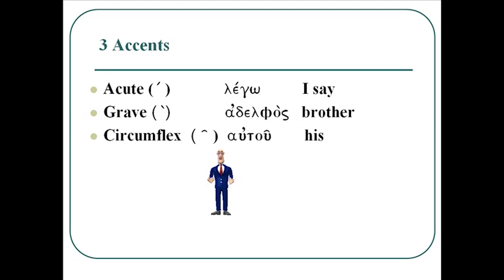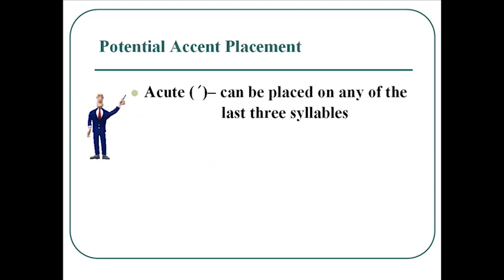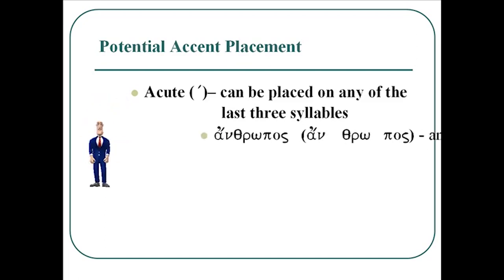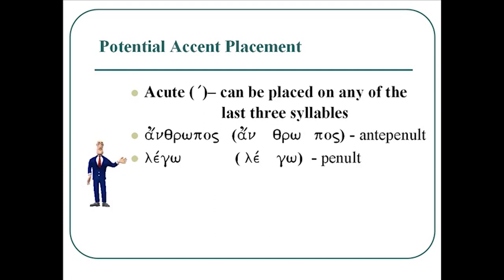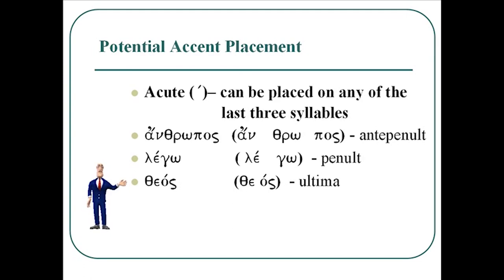Now we need to explore how those accent marks are placed on words. The acute can be placed on any of the last three syllables — on the antepenult, the penult, or the ultima. For example, it's anthropos, where the acute lies on the antepenult; lego, where the acute is found on the penult; and theos, where the acute is on the ultima. So the acute can be placed on any of the last three syllables.